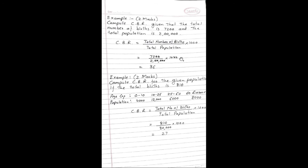See the example for two marks: compute CBR given that the total number of births is 7200 and total population is 2 lakhs. CBR equals total number of births divided by total population into 1000 = 7200 divided by 2,00,000 into 1000. The answer is 36.